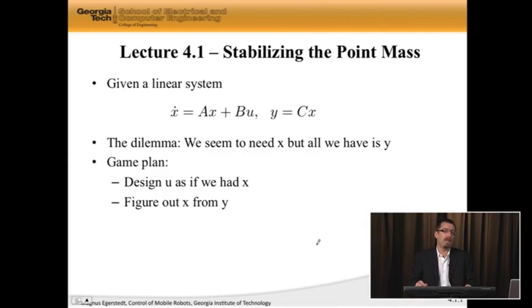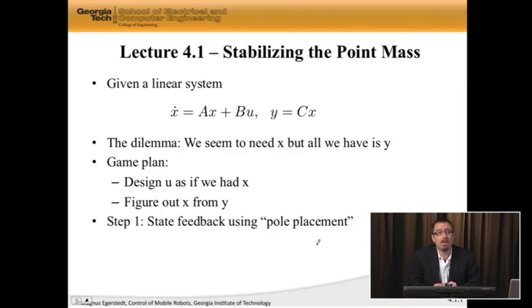Here's the game plan. We're going to ignore the fact that we don't have y. Instead, we're going to design our controller as if we had the state itself. And then somehow, we're going to hope that we can figure out the state from the measurements, meaning from y. And this is the game plan we're going to pursue throughout this entire module. The first step is to design u as if we had x. So step one is to do the control design, and we're going to use a method called pole placement.